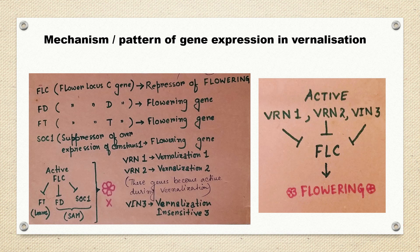When Vrn1, Vrn2, and Vrn3 are active, they together inhibit FLC. And when FLC is inhibited, the result is flowering.